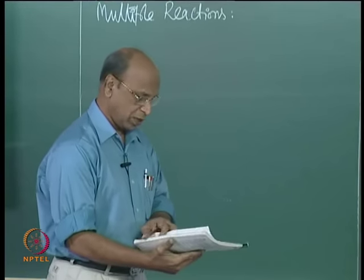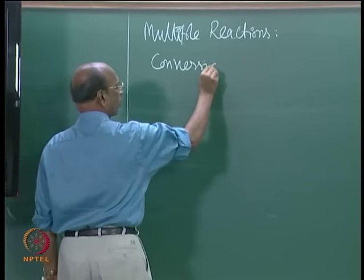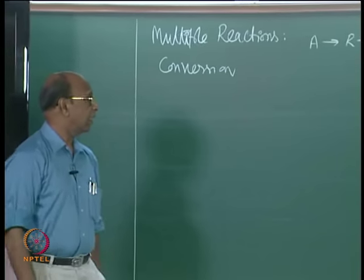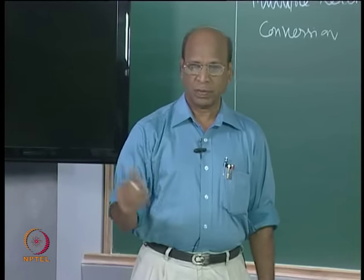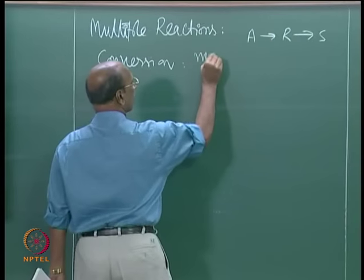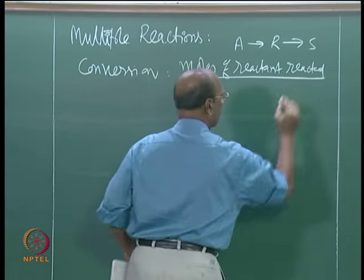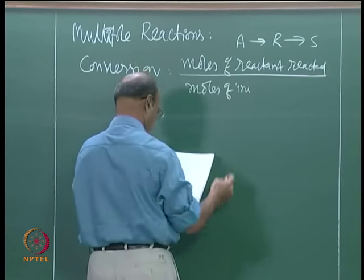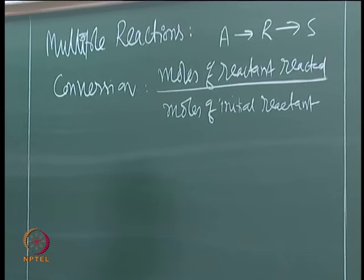There are some more reactions I will also let you know, but before that we should understand the basics. Conversion — all of us know this. For example, if I have A going to R, R going to S, conversion is always defined as moles of a key reactant consumed per initial moles of reactant — that is, divided by CA0.